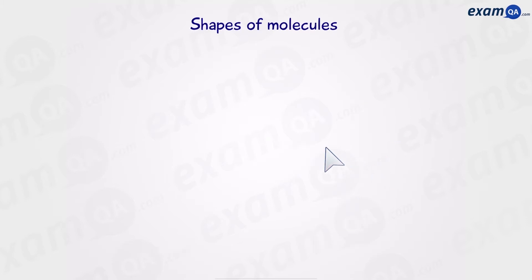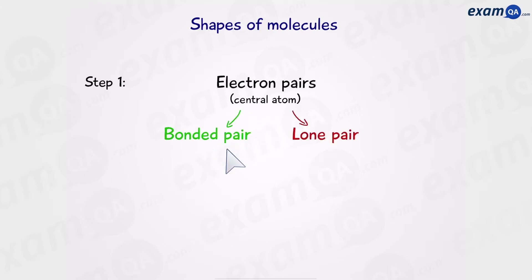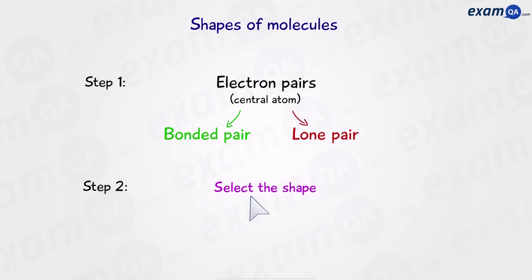In this video, we're going to learn how to draw these molecules, and it comes down to two simple steps. Step one: identify how many electron pairs there are around the central atom — this includes bonded pairs and lone pairs. Step two: select the shape from the shapes table. This requires some memorizing, which is the most difficult part of this topic.